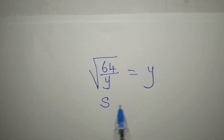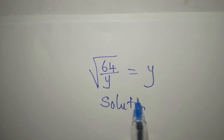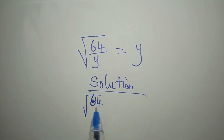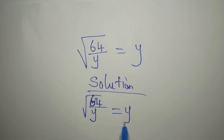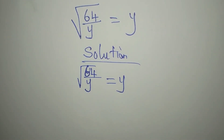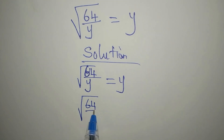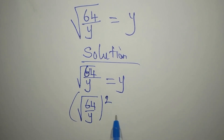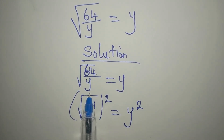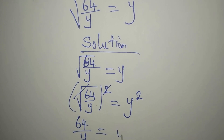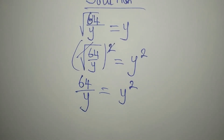Hello everyone. Let's provide a solution to this problem: we have square root of 64 over y equals y. We are going to solve this completely. Now, to remove this square root, we are going to square both sides. Since we brought the square to the left, we have to bring it to the right, so we have 64 over y equals y to the power of 2.